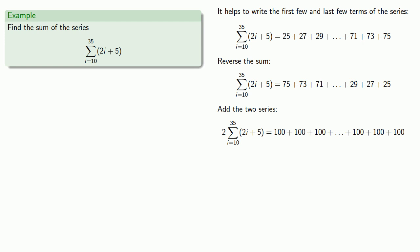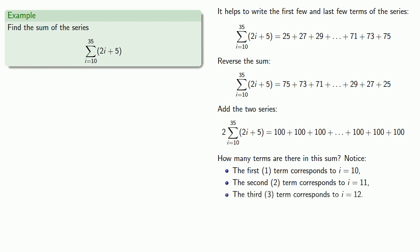Now for the hard part. How many terms are there in this sum? Well we might notice the following. The first one term corresponds to i equals 10. The second two term corresponds to i equals 11. The third three term corresponds to i equals 12.